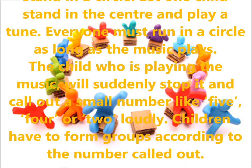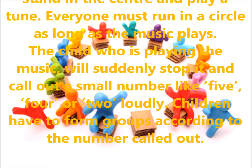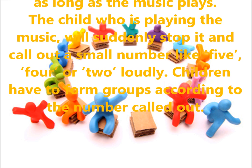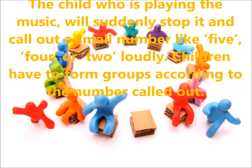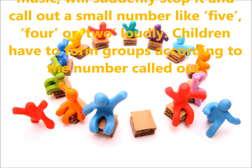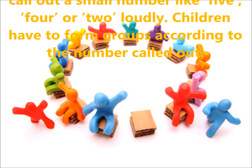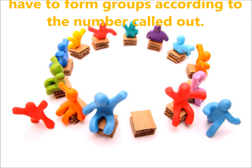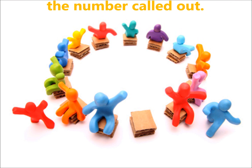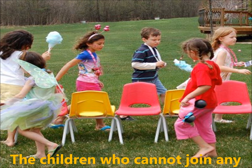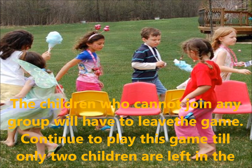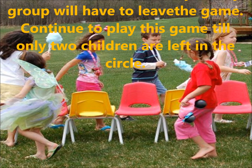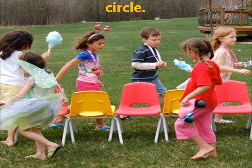Children have to form a group according to the numbers called out. These numbers represent the family numbers. If the number is 5, children who have 5 members in their family come out. If there are 4 members in the family, those children come out. If there are 2 members in the family, they will come out. The children who cannot join any group will have to leave the game. Continue to play until only 2 children are left.